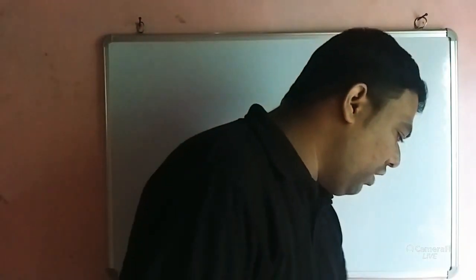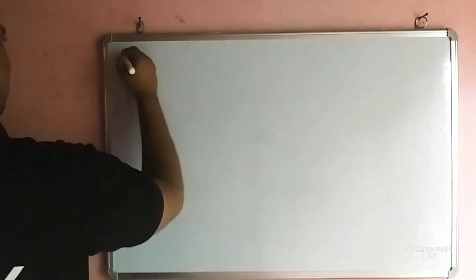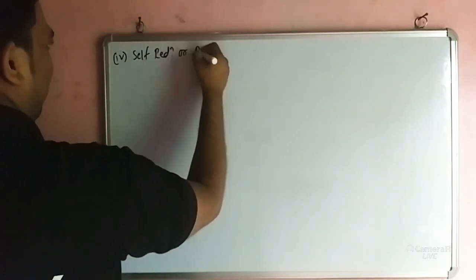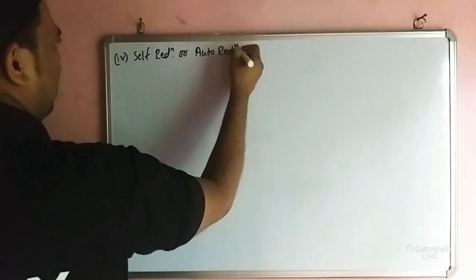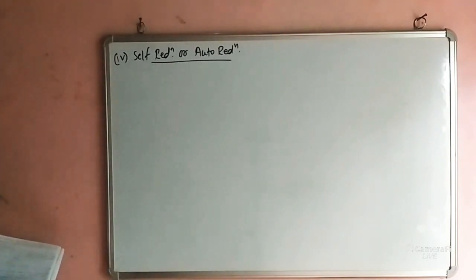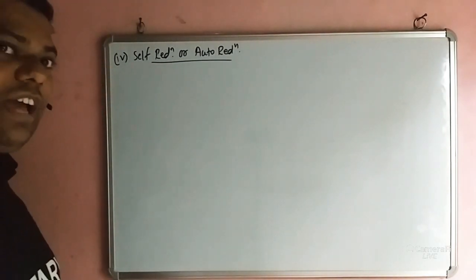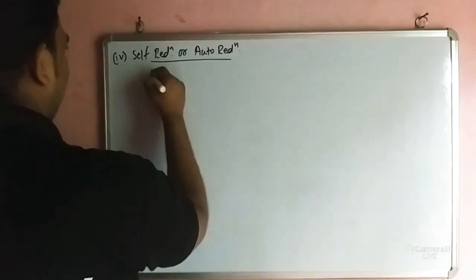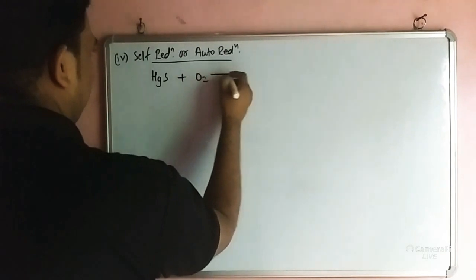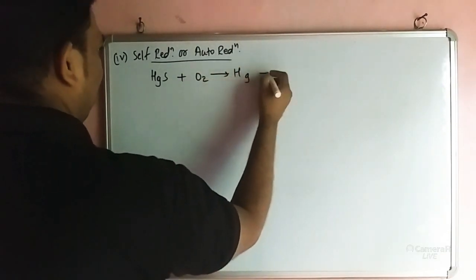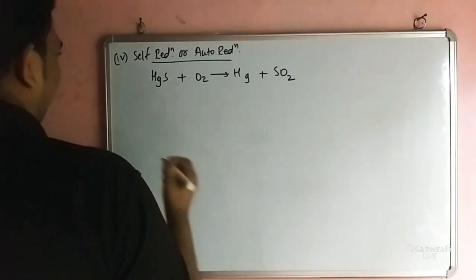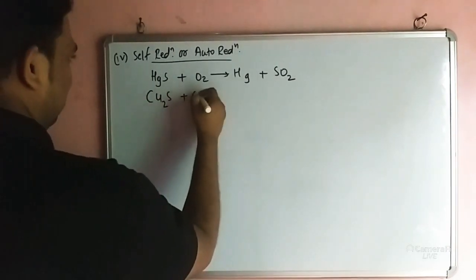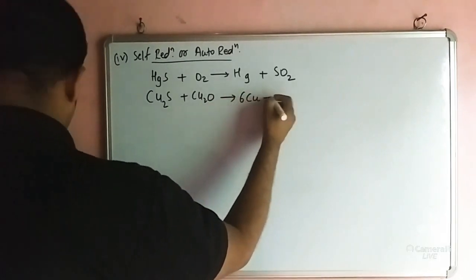Now we discuss self-reduction or auto-reduction. Mercury is directly obtained by roasting of its ore, cinnabar (HgS). The reaction gives HG + SO2. Copper extraction: Cu2S + Cu2O gives 6Cu + SO2. These reactions represent self-reduction or auto-reduction.